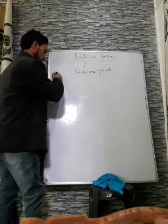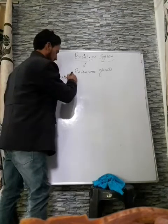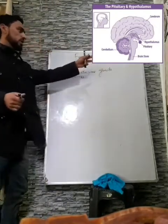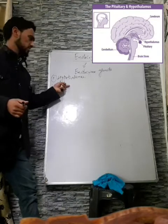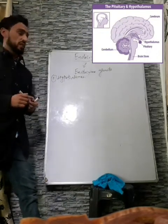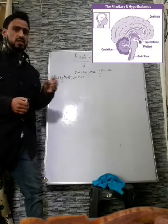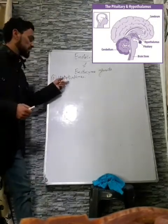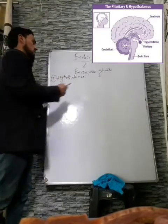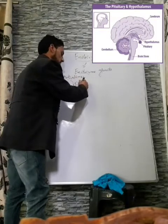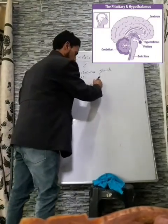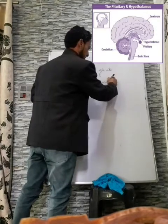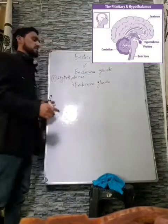The first gland is the hypothalamus. We have already studied the hypothalamus in the nervous system as part of the brain, where it contains various nervous centers and controls various activities of our body. Besides having nervous centers, the hypothalamus also acts as an endocrine gland — it secretes chemical substances known as hormones. So we need to study the endocrine function of the hypothalamus.